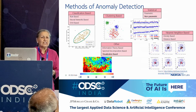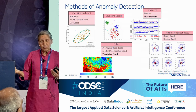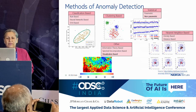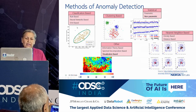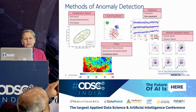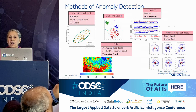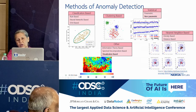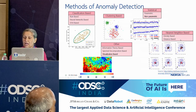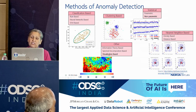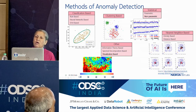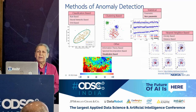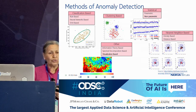There are many methods of anomaly detection depending on the kind of data you have, the problem you're solving, and whether you have labeled or unlabeled data. Classification-based methods apply to labeled data; clustering-based often to unlabeled data. You can do statistical analysis for time series — parametric or non-parametric. There are nearest-neighbor-based methods. There are also visualization methods such as self-organizing maps that can be used for anomaly detection.